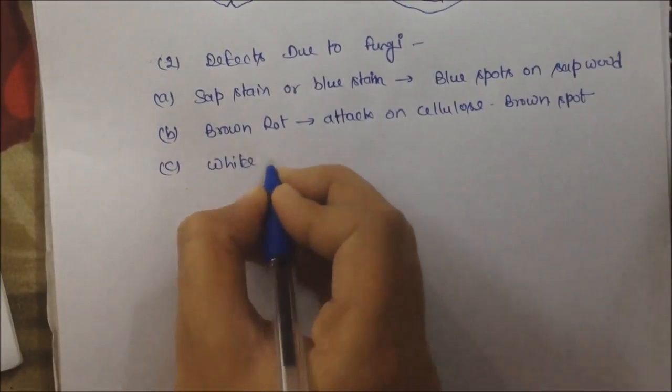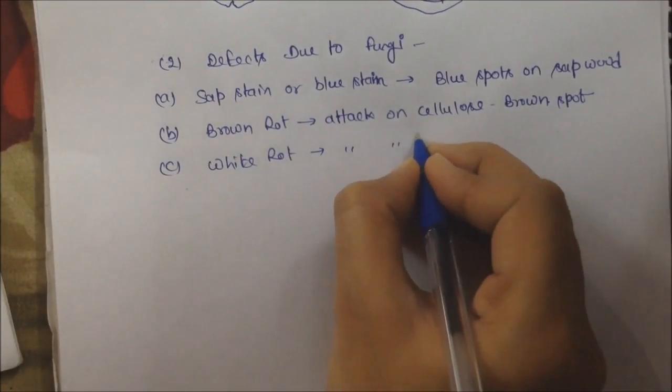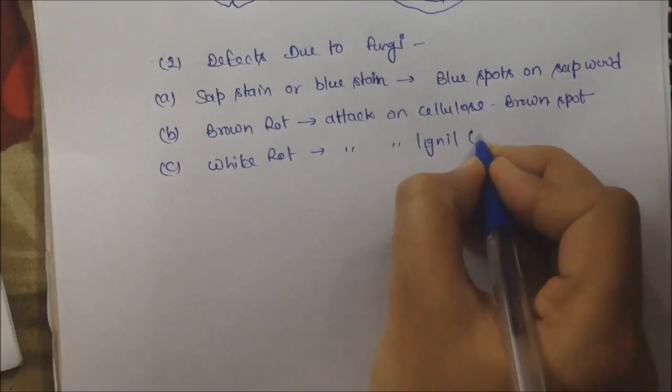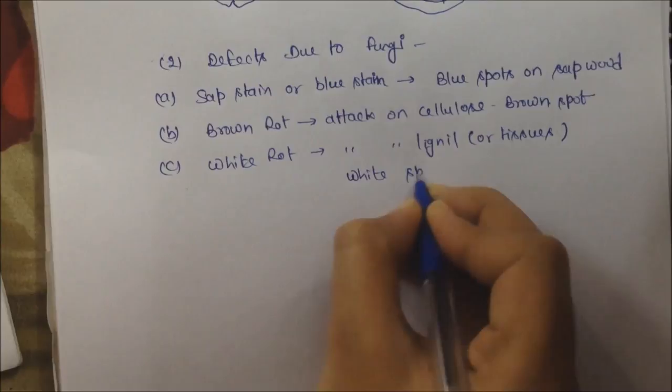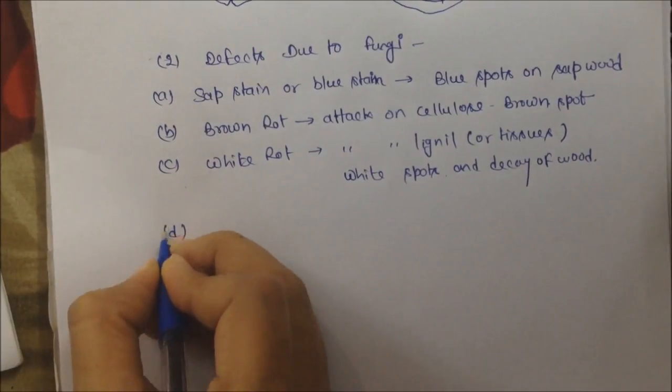Next is white rot. In this case, the fungi affects lignin and tissues. White spots appear on the timber and it decays. That is called white rot.